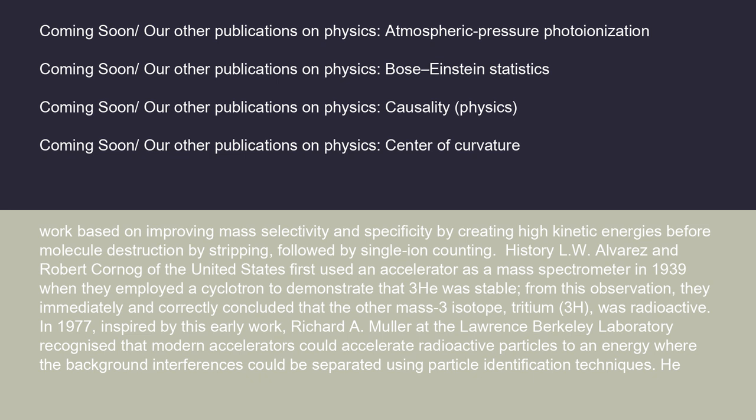L.W. Alvarez and Robert Cornog of the United States first used an accelerator as a mass spectrometer in 1939 when they employed a cyclotron to demonstrate that 3He was stable. From this observation, they immediately and correctly concluded that the other mass-three isotope, tritium (3H), was radioactive. In 1977, inspired by this early work, Richard Muller at the Lawrence Berkeley Laboratory recognized that modern accelerators could accelerate radioactive particles to an energy where background interferences could be separated using particle identification techniques.